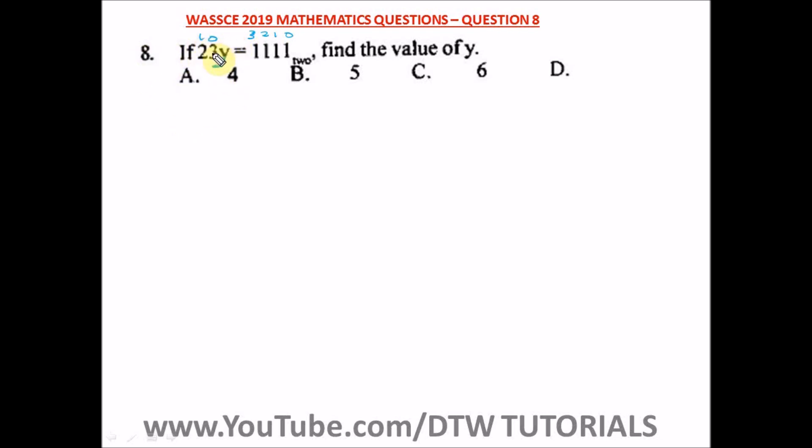In converting this to base 10, we have 2 times y raised to the power 1, plus 3 times y raised to the power 0, equal to. Since this is in base 2, we have 1 times 2 raised to the power 3, plus 1 times 2 raised to the power 2, plus 1 times 2 raised to the power 1, plus 1 times 2 raised to the power 0.